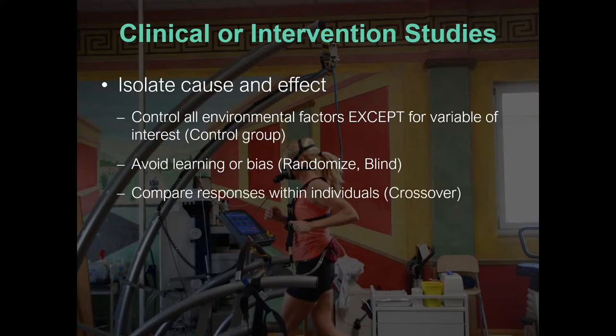We can also compare responses within an individual using a crossover design, where both individuals complete both arms of the trial. This ensures there is a response with the variable and no response without it, allowing us to confidently say this causes that. This is where we get our actionable knowledge: if you exercise, we know this happens.